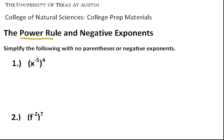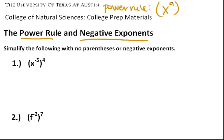We're going to be going over the power rule and working with negative exponents. So what is the power rule? Well, if you have a number x raised to a certain power a, and that's raised to another power b, you can get rid of the parentheses and simplify this so that x to the a times b — or x to the ab — is your simplified answer. That's the power rule.